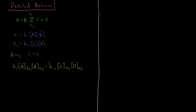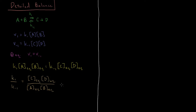We can divide both sides by K1, by the concentration of A, and by the concentration of B. Then what we'll get is the ratio of K1 to K-1 equals the equilibrium concentration of C times the equilibrium concentration of D divided by the equilibrium concentration of A times the equilibrium concentration of B. And if you notice, for this single reaction, if you were to write an equilibrium constant, it would be that same expression — concentration of C times D divided by concentration of A times B. So this expression is equal to the concentration equilibrium constant Kc.